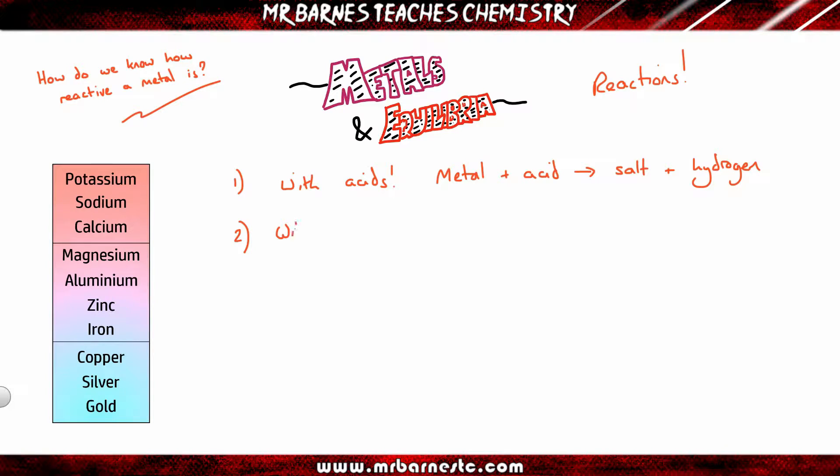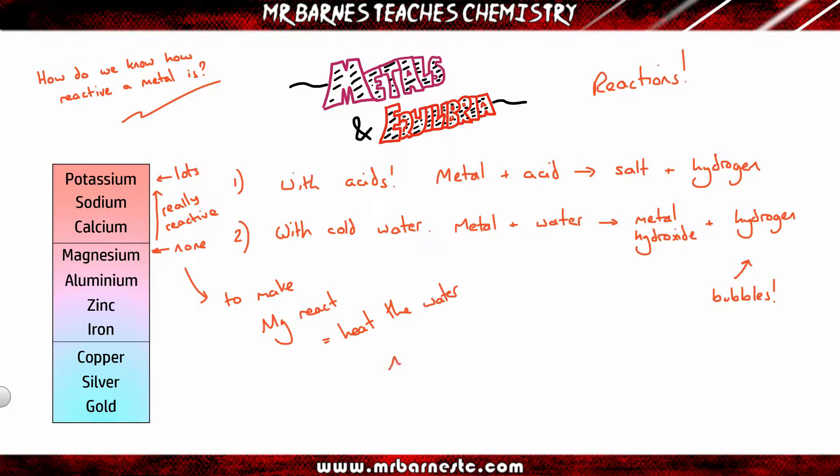The second type of reaction you can look at is with water, in particular cold water. If you take any metal and react it with water, you'll either get metal hydroxide or metal oxide, and again hydrogen gas. Once again, the more bubbles you get, the more reactive it is. With potassium you'll see lots of bubbles, but magnesium you're not going to see any. The reason is magnesium isn't reactive enough to react with cold water. From that, you know calcium upwards in this reactivity series are my really reactive metals. Magnesium down to iron are less reactive, and to make those react you need to react it with steam.